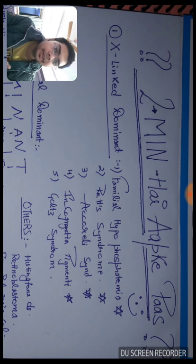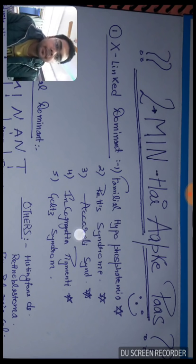The five X-linked dominant diseases are: familial hypophosphatemia, Rett syndrome, Aicardi syndrome, incontinentia pigmenti, and Goltz syndrome.